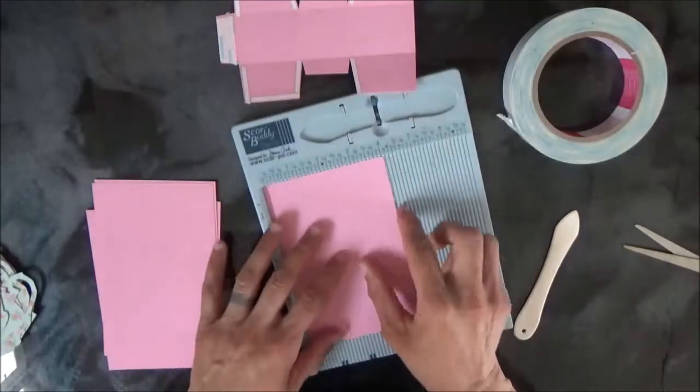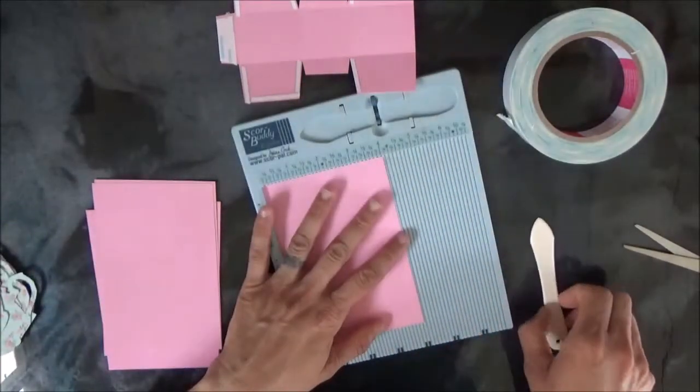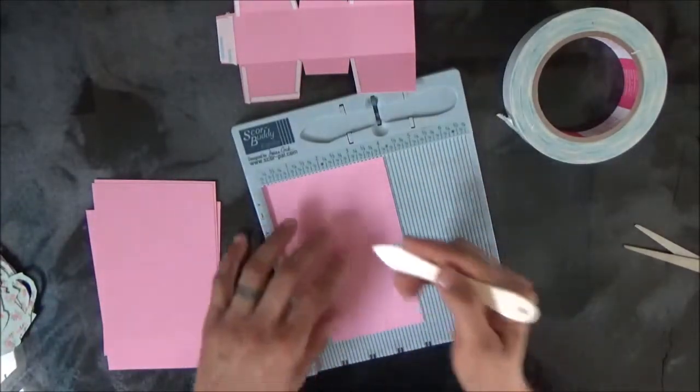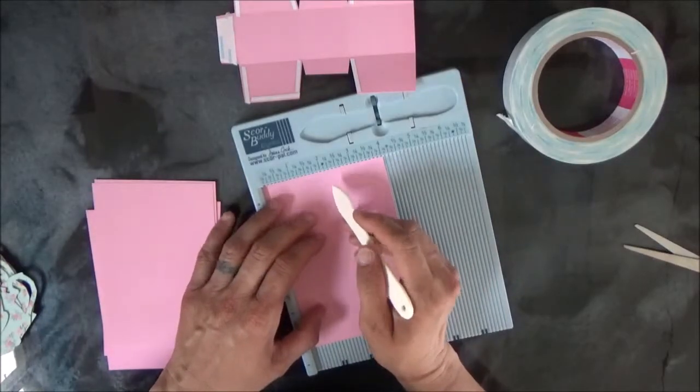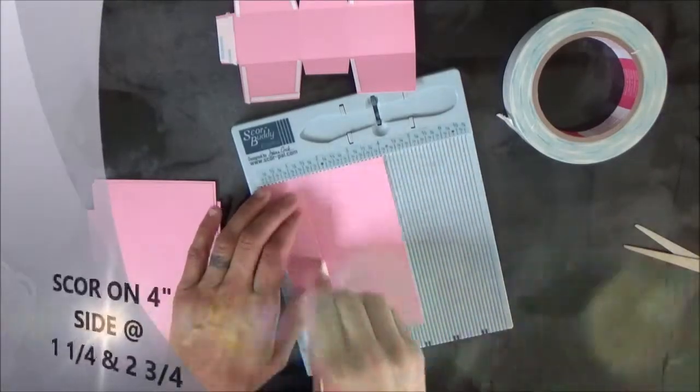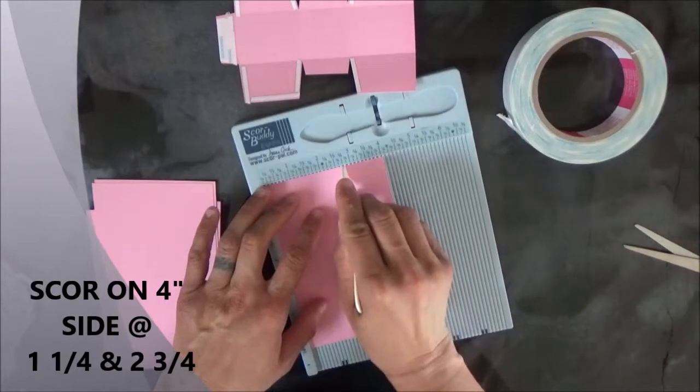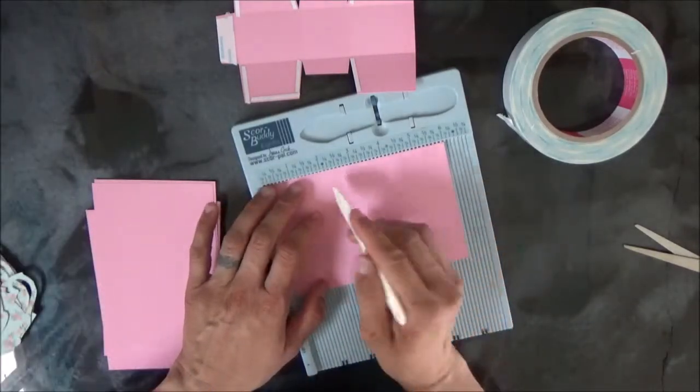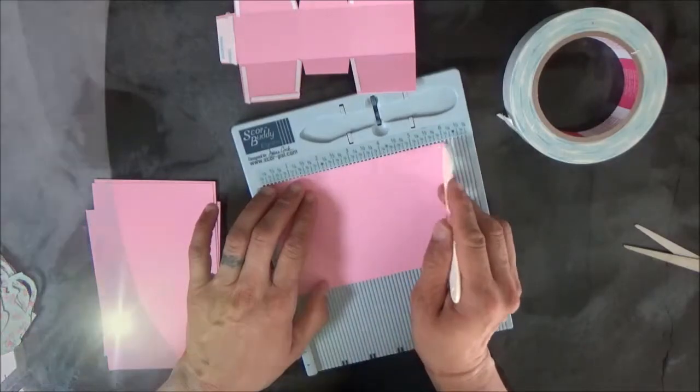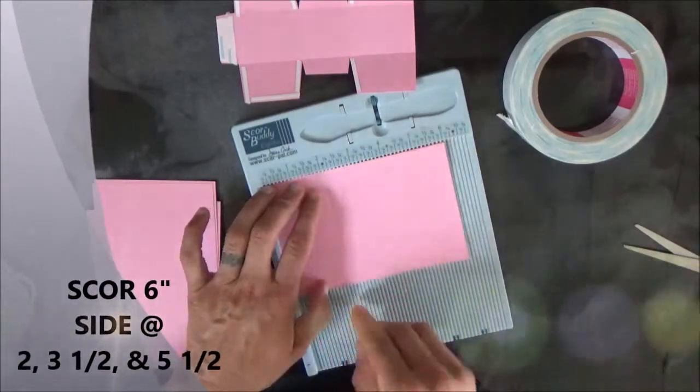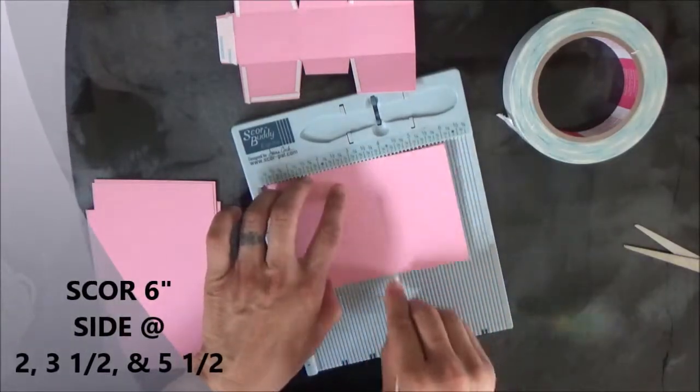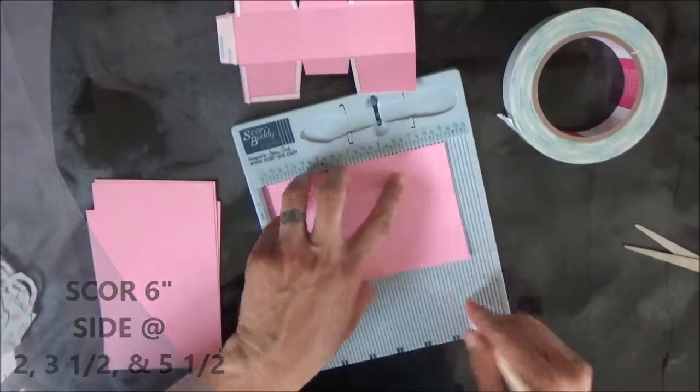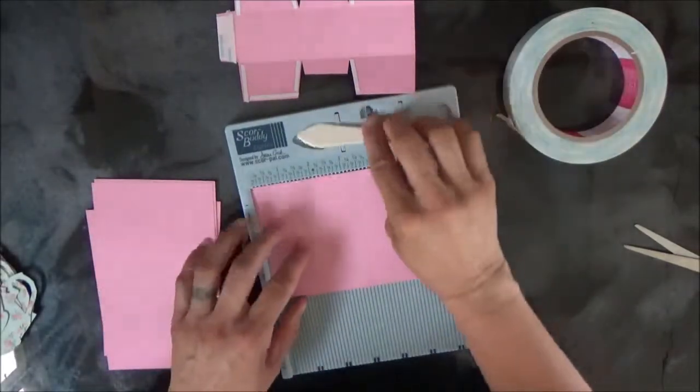So you will start out with a piece of paper or cardstock that's four by six. On the four inch side you're going to score at one and a quarter and two and three quarter, and just give it one rotation. On the six inch side you're going to score at two, three and a half, and five and a half. That's all the scoring that you have to do.